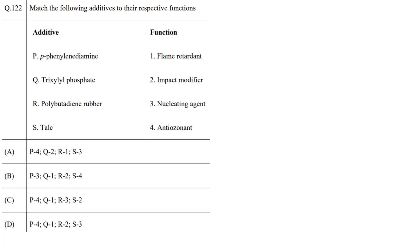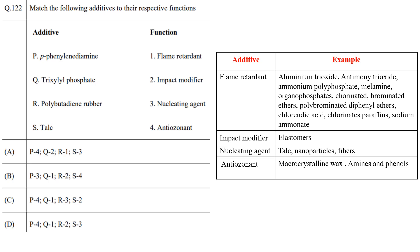In this question, match the additives with their functions. Polymers are mixed with different types of additives such as curing agents, thermal stabilizers, colorants, and processing aids. Flame retardants are chemicals added to polymers to slow or prevent the start or propagation of fire. Impact modifiers increase flexibility and impact strength for rigid parts. Nucleating agents are inorganic materials added to increase crystallinity and shorten cycle time. Anti-ozonants prevent or retard damage caused by ozone. The correct answer is option D.